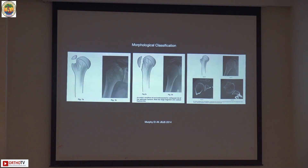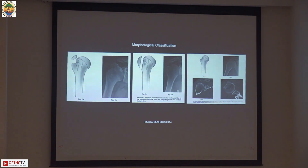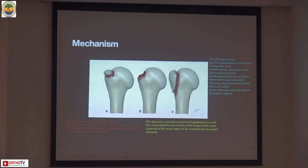Type one is an avulsion type of injury. Type two is a segment of the GT that is split — this type two can be divided into multiple subtypes, though the paper only describes a split-type injury. Type three is a depressed type of fracture, similar to a Hill-Sachs injury that happens in dislocations, or just a depression; it can be managed conservatively.